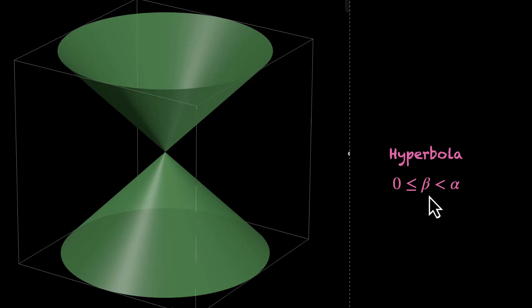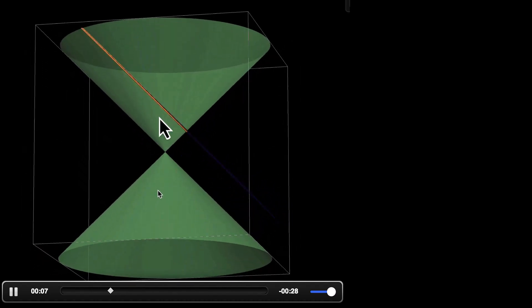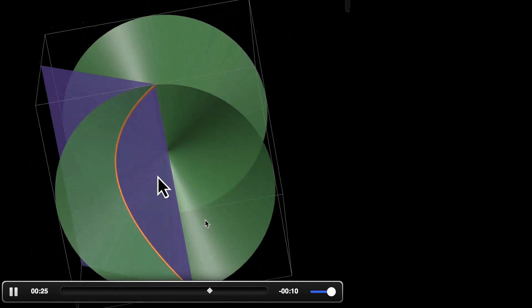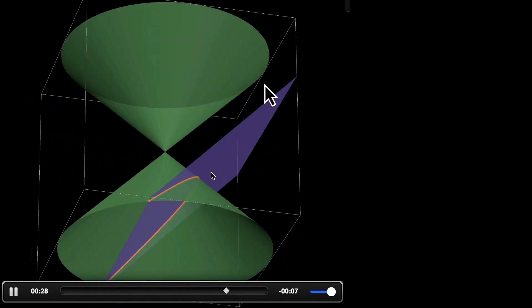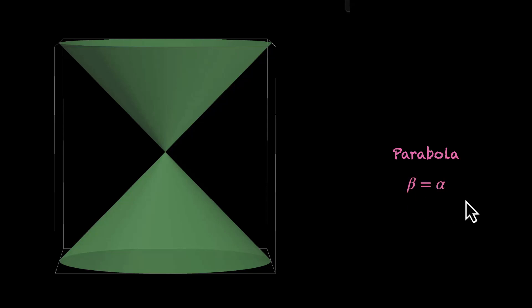What happens if this angle is exactly equal to alpha? Let's see that in action. What happens if we cut a plane that is inclined at the exact same angle as this cone? Here's our plane making the exact same angle — this is what we get. This is called a parabola. You can get the parabola on this nap or on this nap, but only on one of them. You only get the parabola when this plane makes an angle beta which is exactly the same as alpha.